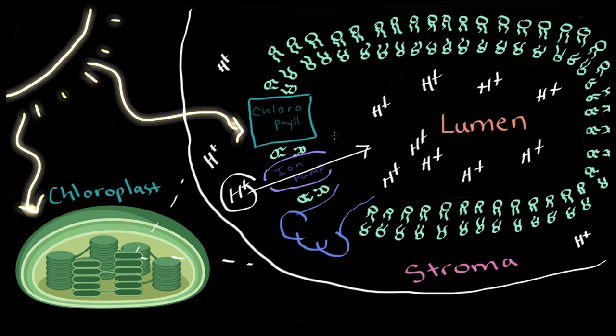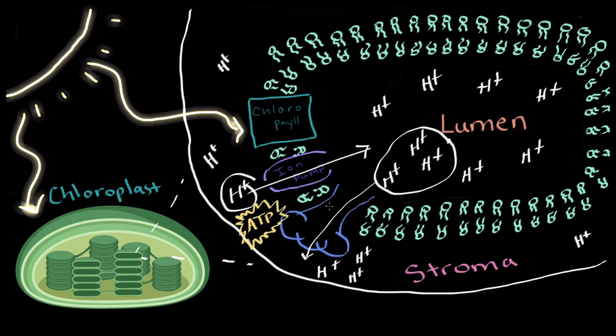But the next segment of this process happens outside of the thylakoid, in the stroma. So to get that energy where it's needed, the thylakoid transfers the energy to a molecule called ADP, adenosine diphosphate, by adding another phosphate bond and making it ATP, adenosine triphosphate. Now you might have heard of this one. It's often called the energy currency of the cell. Pretty much wherever energy is needed for a cell to do work, ATP is involved.